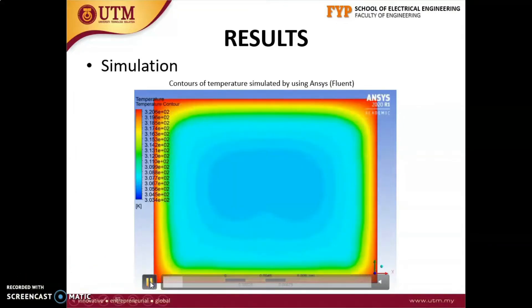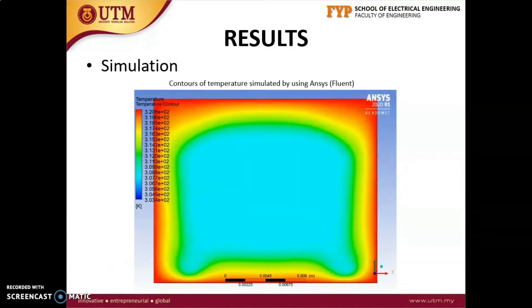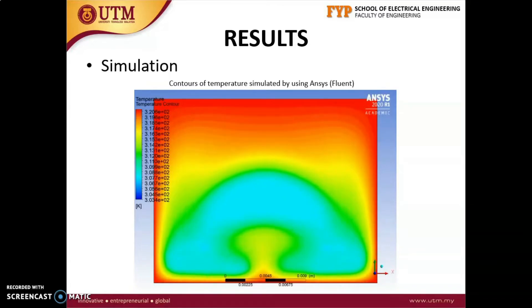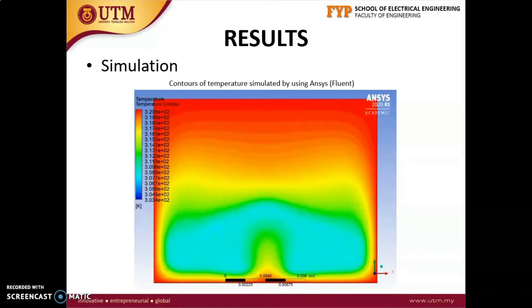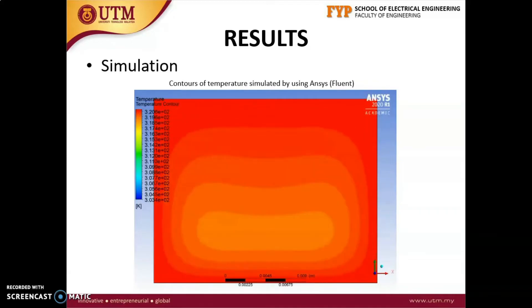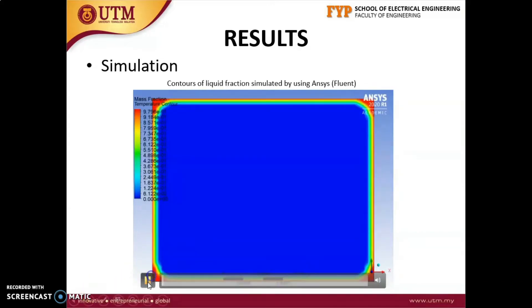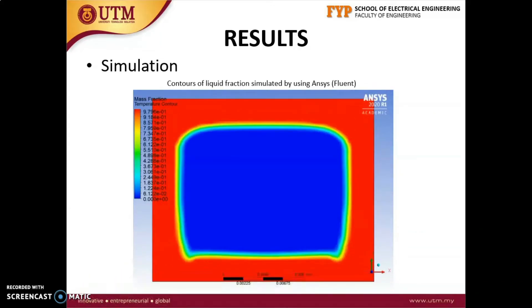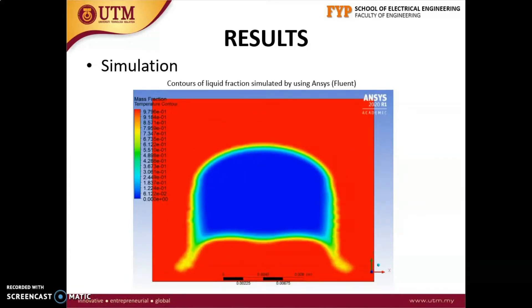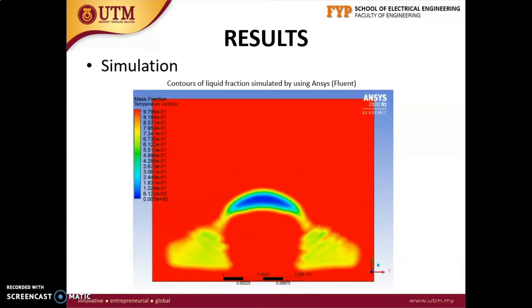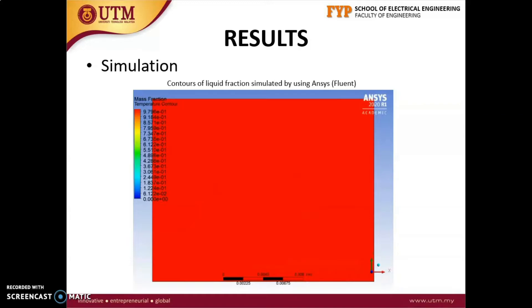This video shows the temperature of PCM domain from 30 seconds to 900 seconds. The blue color zone shows the low temperature and the red color zone shows the high temperature. At the end of the melting process, all the PCM is in liquid phase and the properties become constant. This video shows the contours of liquid fraction of PCM domain from 30 seconds to 900 seconds. By observing the contours, the shape and motion of the melting interface as time passes can be determined. The red color represents the condition when PCM is completely liquid and blue color represents when PCM is completely solid.